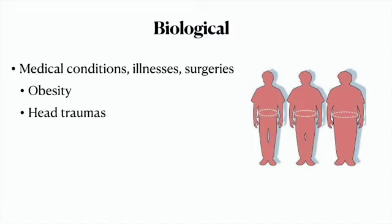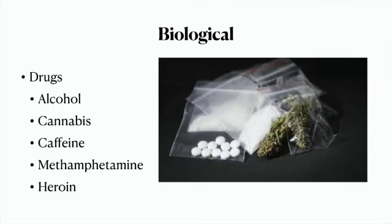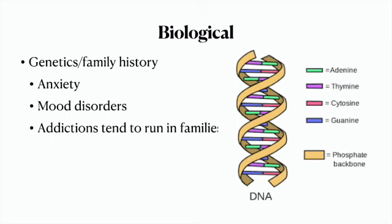Medical conditions also play a role. For example, obesity is associated with increased risk of anxiety and depression in addition to physical problems like high cholesterol and diabetes. Head trauma such as concussions can lead to memory or cognitive impairment and increased likelihood of attention deficit disorder. Substances — alcohol, cannabis, caffeine, methamphetamine, heroin, and others — each have their own possible psychiatric effects. Family history is important because many conditions run in families, including anxiety, mood disorders like depression or bipolar, addictions, and schizophrenia.